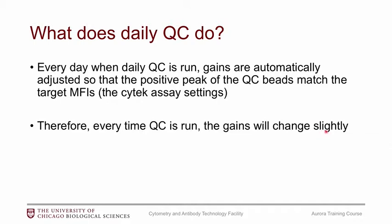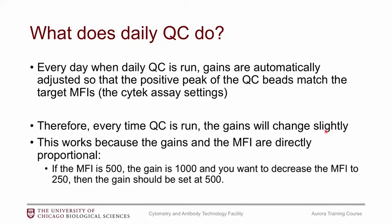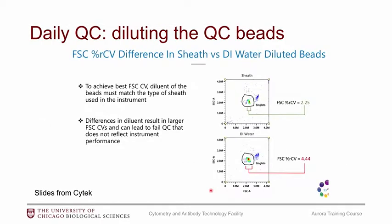From one day to the next, you might see gains changing by 10 or 30 — small amounts. If you see gains changing by 300 or 500, something has gone wrong. This works because gains and MFI are directly proportional: if the MFI is 500 at a gain of 1000, you'd set the gain to 500 to get an MFI of 250. One important note: make sure you dilute the QC beads with sheath and not DI water. If you use DI water, you'll get a buffer mismatch and fail the forward scatter on the QC.